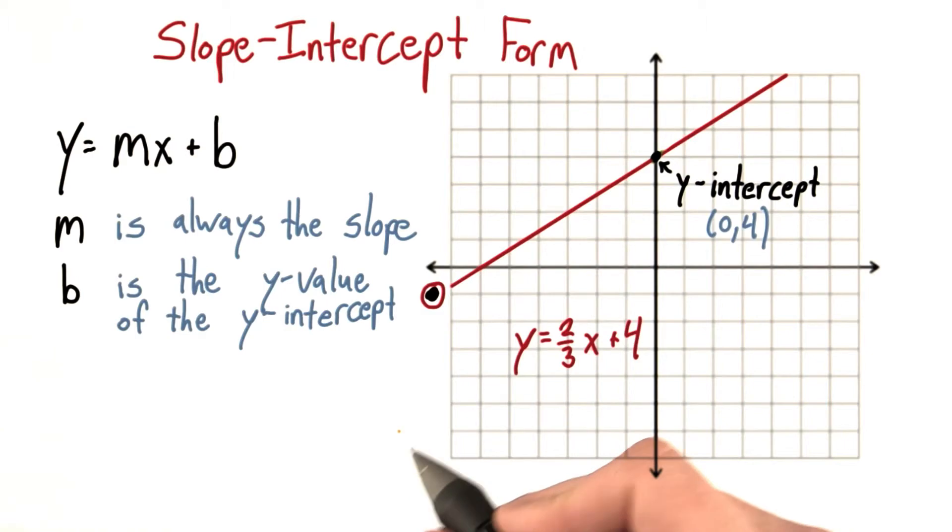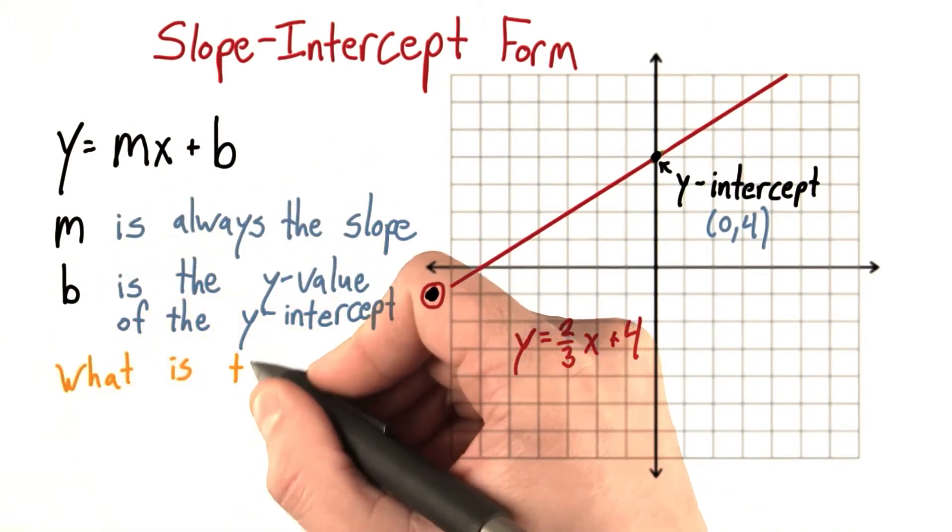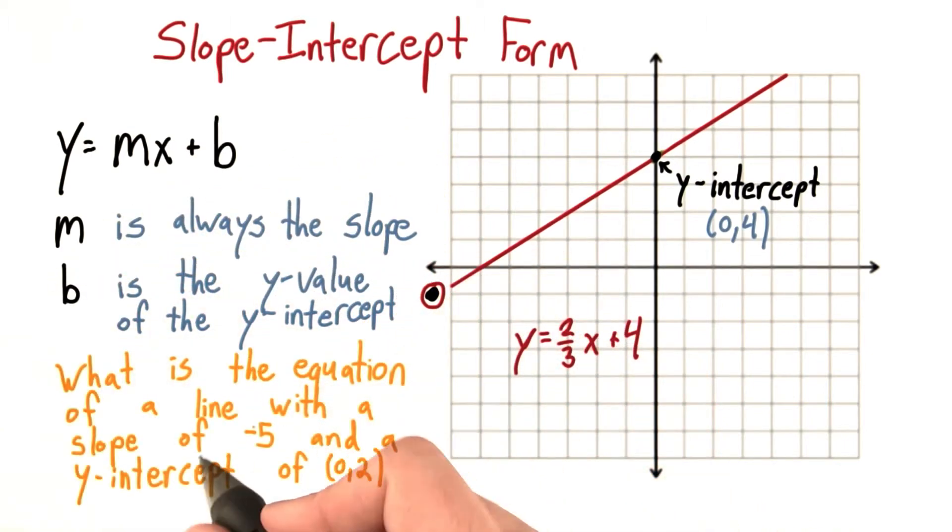Now, maybe you can answer a question using this idea of slope-intercept form. What is the equation of a line with a slope of negative 5 and a y-intercept of (0, 2)? Enter your equation in this box.